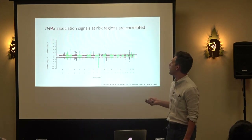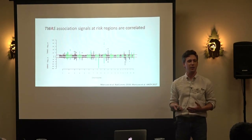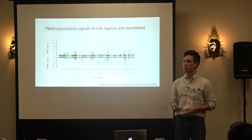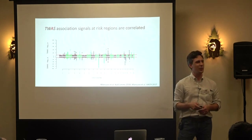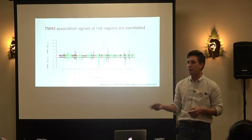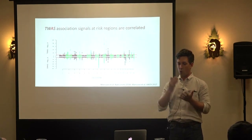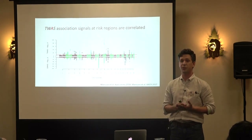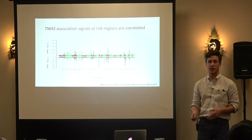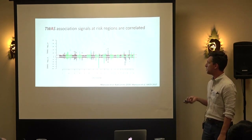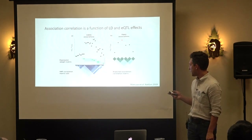One thing to emphasize is that TWAS is not necessarily a test for causality. Under some very strong assumptions it's consistent with that, but it's right there in the name — there's an A — it's an association test. What pops up is simply a test for association. Just because we observe signal doesn't mean risk is mediated. So we wanted to figure out a model that could capture this and explain it.